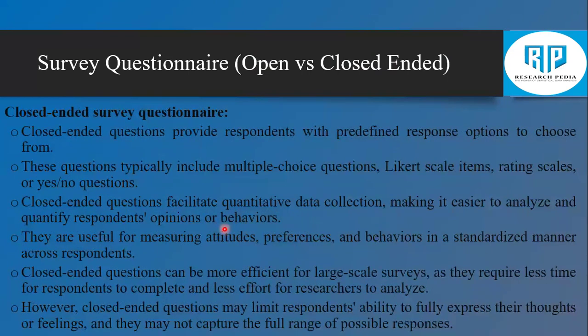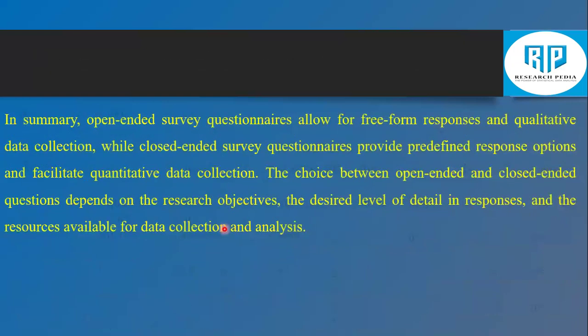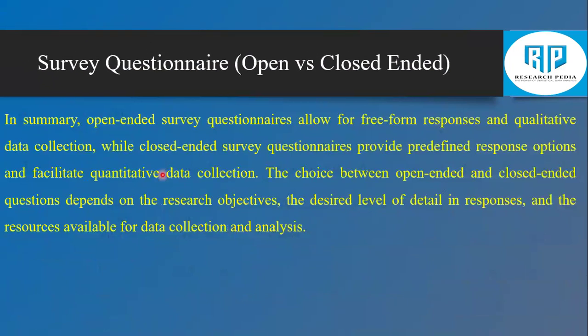For quantitative data analysis, SPSS, AMOS, and SmartPLS are used, while for qualitative data, NVivo is used. In summary, open-ended surveys allow for free-form responses and qualitative data collection, while close-ended surveys provide predefined options and facilitate quantitative data collection. The choice depends on research objectives and resources available.